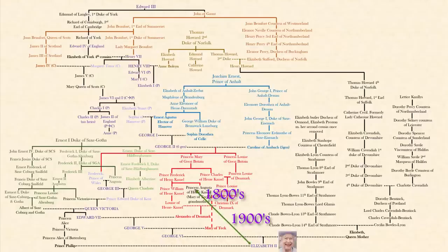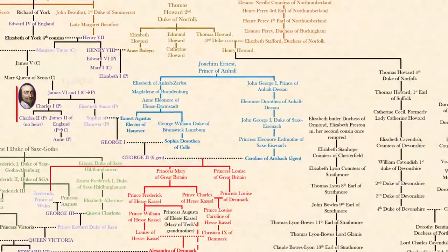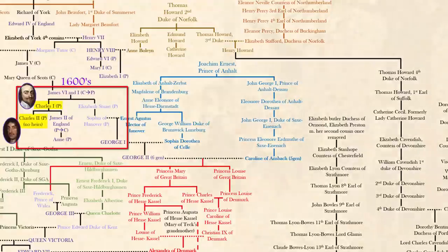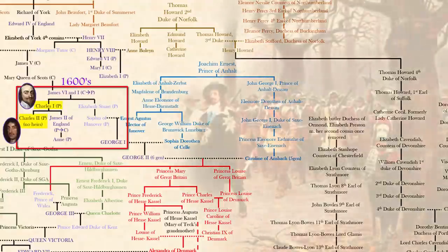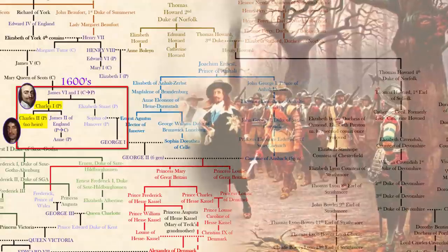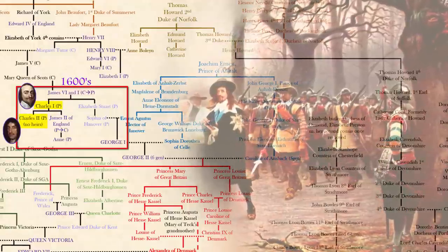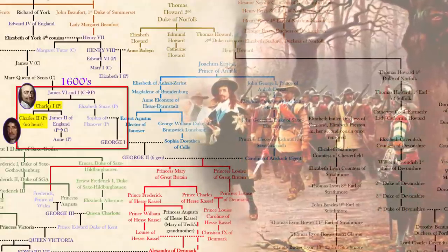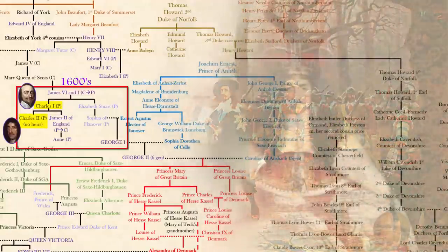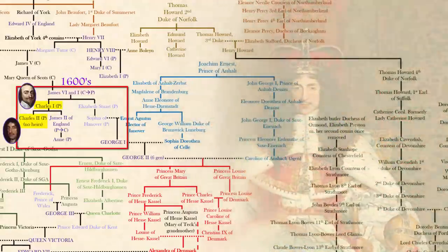Charles I and II are in this part up here, in the 1600s. Charles I was the father, Charles II was the son. This is the time of the English Civil War, when Parliament kicked out the monarch — specifically Charles I — and then brought back his son after 11 years of unrest.